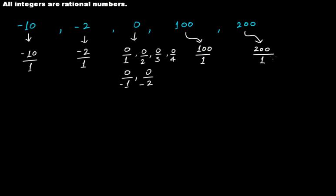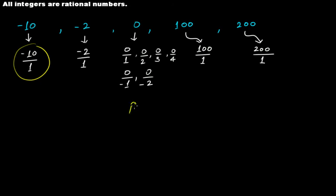Now clearly this is also a form of a rational number. So in these four cases you can only have 1 as a denominator, but in the case of 0 it can have any integer in the denominator — only 0 you cannot use, but rest all you can use. So this was a difference. Now if you check this: minus 10 over 1. The form of a rational number is P over Q.